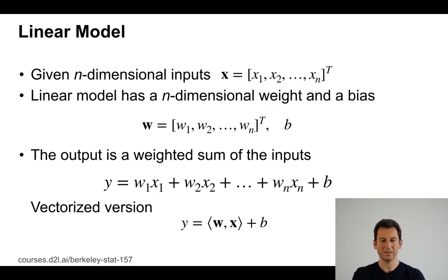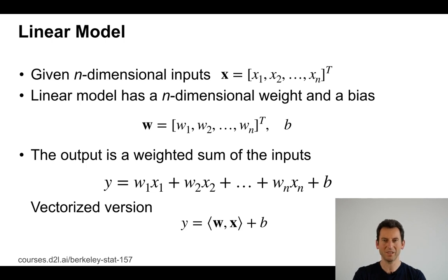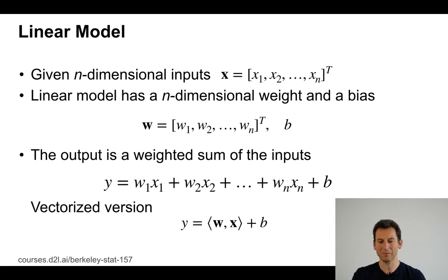So in math, given some n-dimensional input x of x1 through xn, and some weights w1 through wn and bias, y is going to be w transpose x plus b — in other words, the sum over wi times xi plus the bias b. This is a linear model. Such models are some of the most popular models in machine learning and statistics, and a lot of really beautiful things can be said about them. For us, they are just a point of departure as we go to deeper, more nonlinear models, but for now let's stick with these.